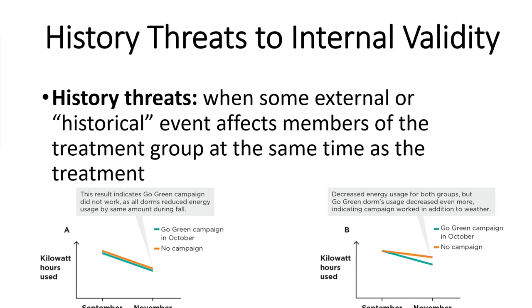Our next category is history threats. These occur when some external or historical event affects members of the treatment group at the same time as the treatment. We're saying there is something else going on in the background — a third variable that's driving everything — that you're not manipulating or measuring. It affects the whole group, and it isn't the thing you're measuring.